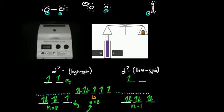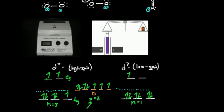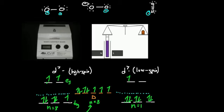Paramagnetic compounds weigh more in the magnetic field. Also, the more unpaired electrons you have, the heavier it becomes. So if you had an octahedral compound with the same metal and the same six ligands, except one's high spin and one's low spin, the high spin would appear to weigh more in the magnetic field because there are more unpaired electrons. The low spin has fewer unpaired electrons, so it would appear to weigh less. You'll calculate the molar susceptibility and use it to back-calculate the number of unpaired electrons.